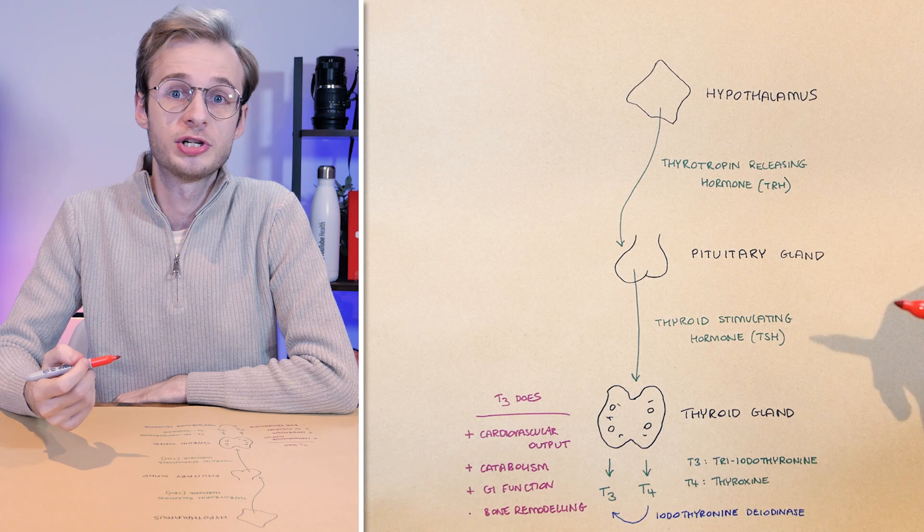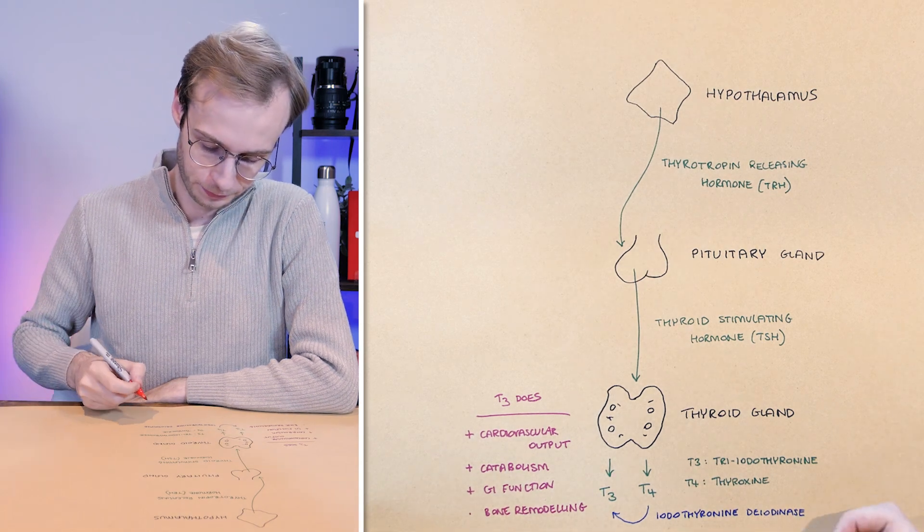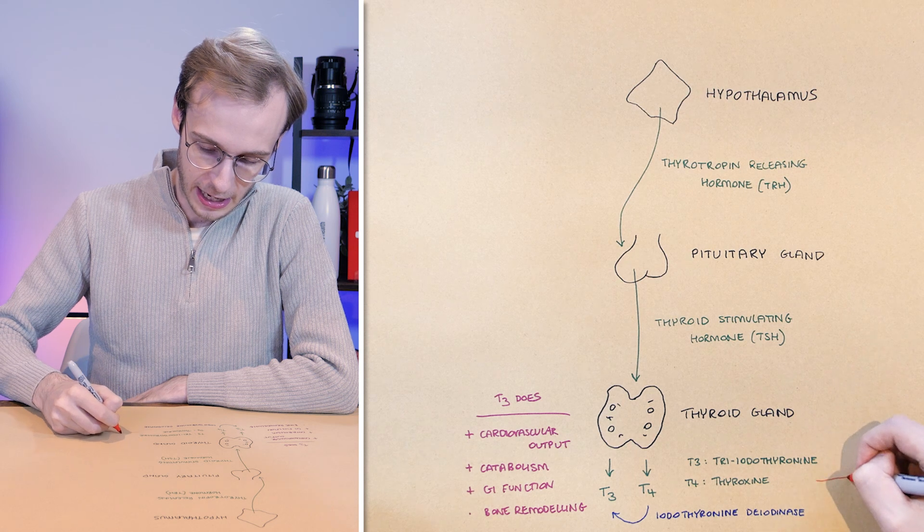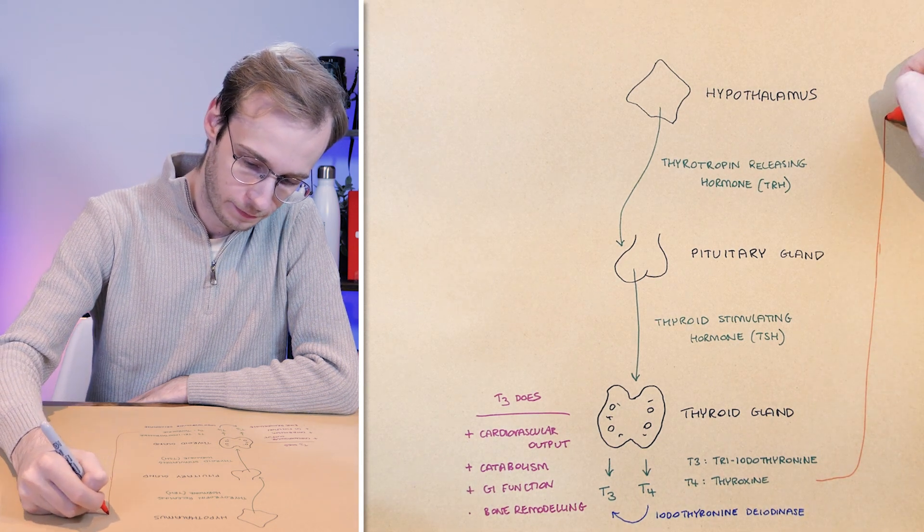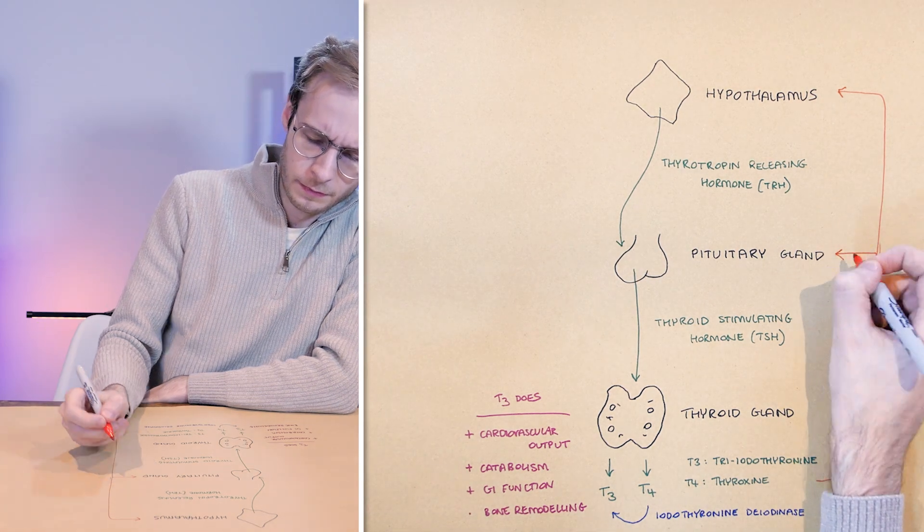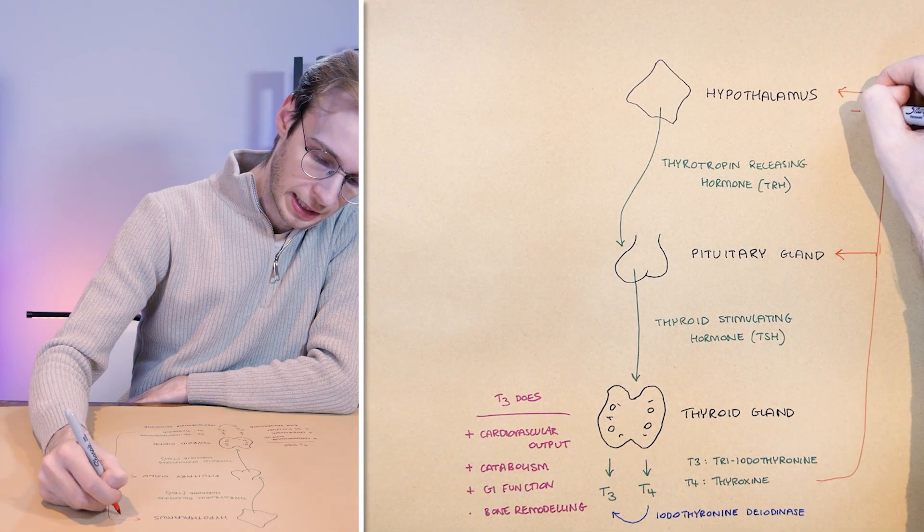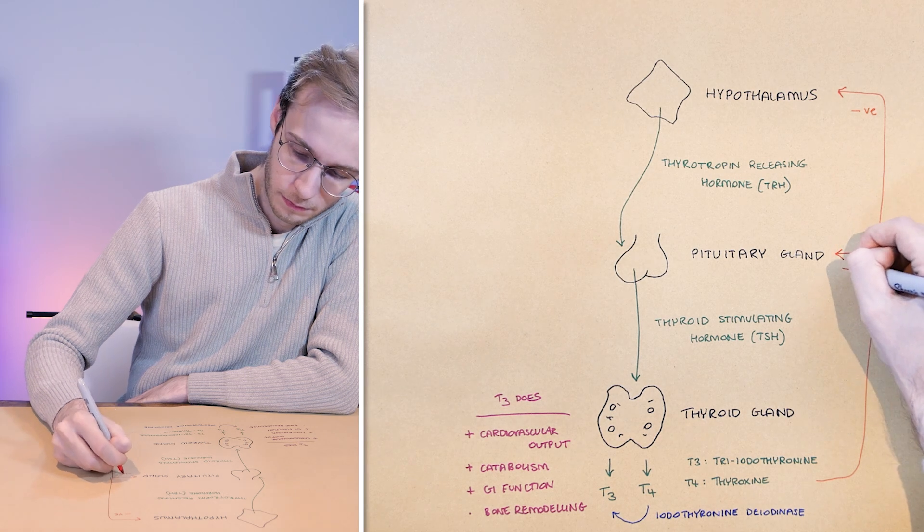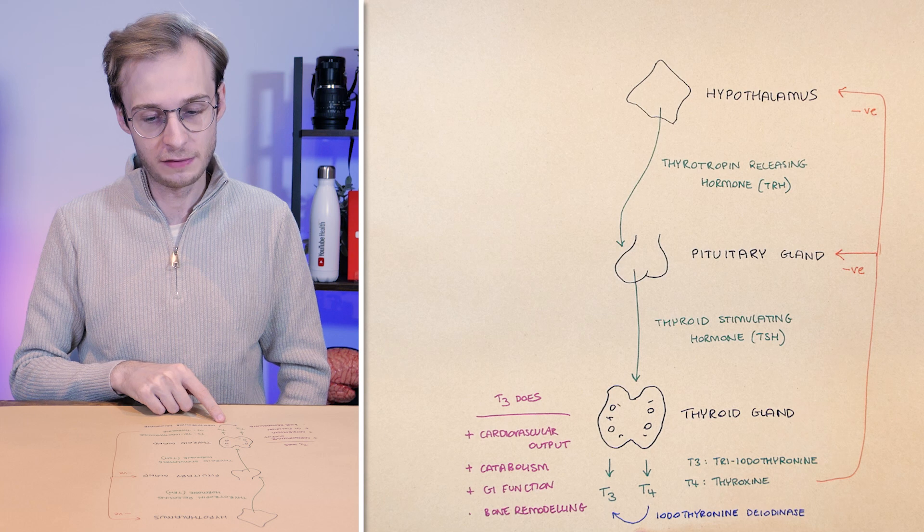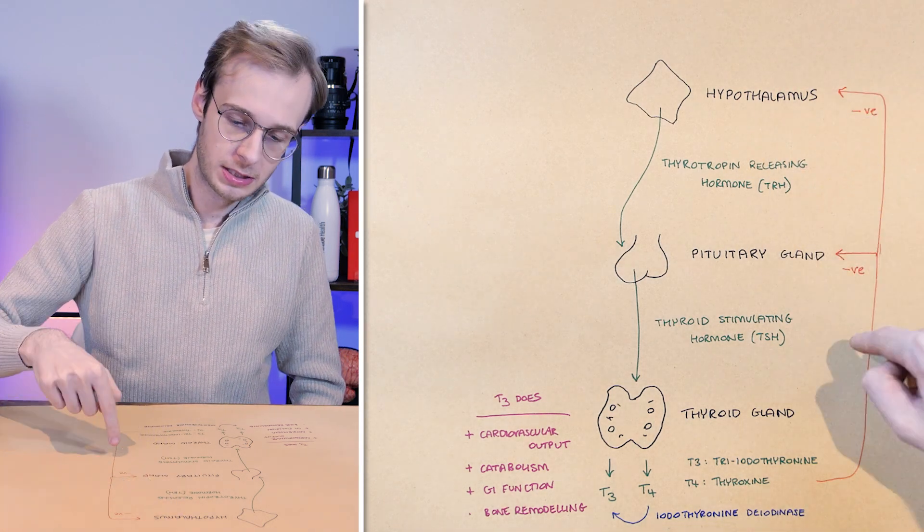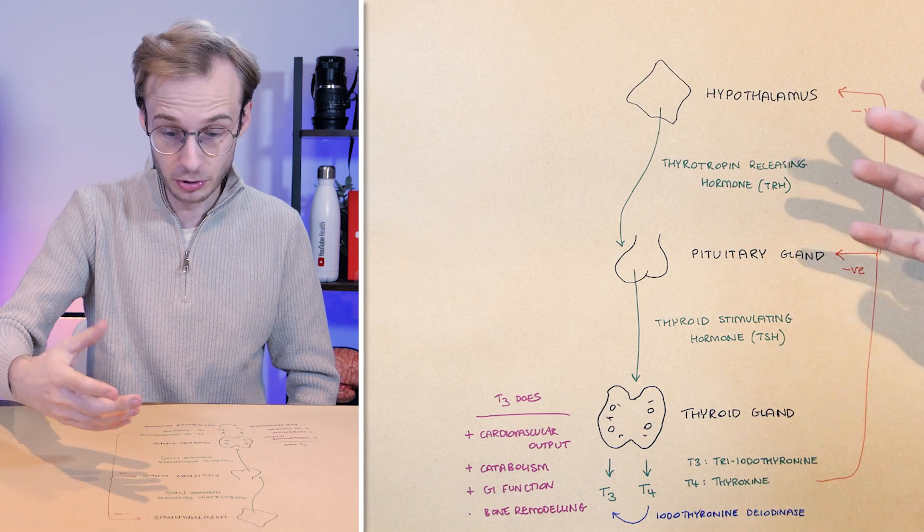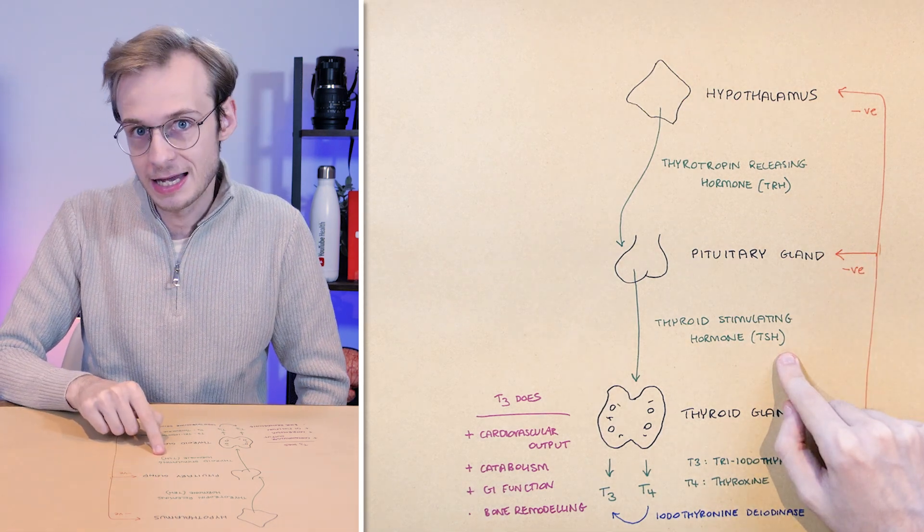So then how does self-regulation of thyroid hormones work? The presence of T3 and T4, so we're going to take our red now, have a negative feedback loop on both the hypothalamus and the pituitary gland. That is to say that if you have excess or very high T3 and T4, you would expect to find low thyrotropin-releasing hormone as the body is telling the brain not to make more, and you would expect a low TSH as well.